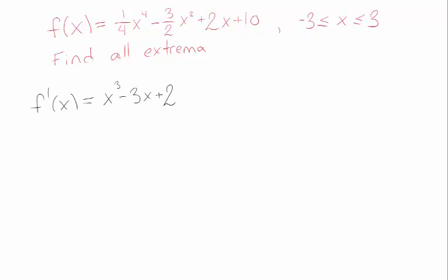Remember, critical points are when the derivative is 0, and singular points are when it doesn't exist. Now this derivative exists definitely between minus 3 and 3, for all real numbers, so there are not going to be any singular points this time, just critical points, so we need to figure out when this thing is equal to 0.